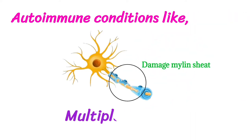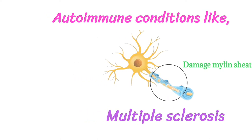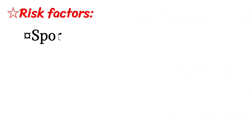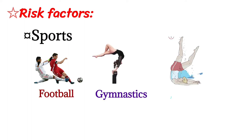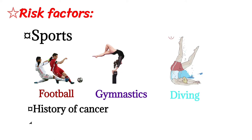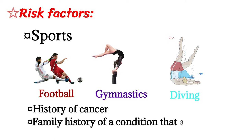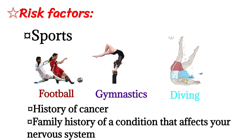Some neurological conditions like stroke and cerebral palsy, and autoimmune conditions like damaged myelin sheath, which is multiple sclerosis, can also cause paraplegia. Risk factors include sports like football, gymnastics, and diving, as well as a history of cancer and family history of a condition that affects the nervous system.